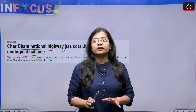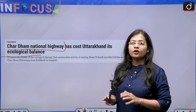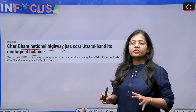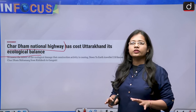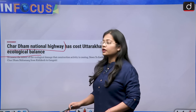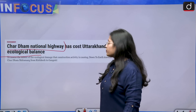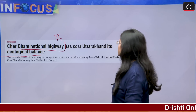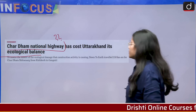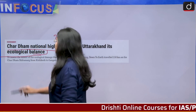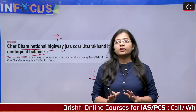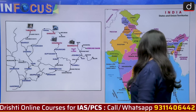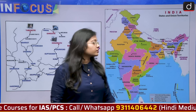Recently, the state of Uttarakhand has been in news because of the sinking of Joshimat, where houses are experiencing cracks on their walls. Now we are also talking about the Char Dham National Highway associated with Uttarakhand — what it is, and why it has caused ecological imbalance that environmentalists across India were focusing on. Let us first look at the map.